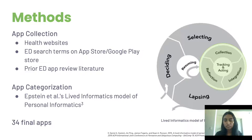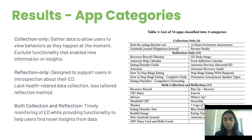The three categories are: collection only, reflection only, and collection and reflection. Here is a table showing our categorization. The majority of apps involve both collection and reflection functionalities. Apps in the collection only category mainly gathered user data to allow users to view their behaviors in the moment. However, these apps exclude functionality that enables new information or insights which could support reflection.